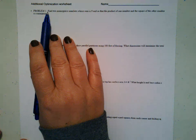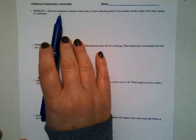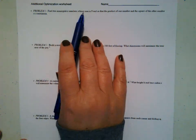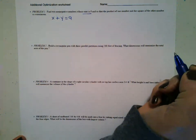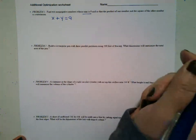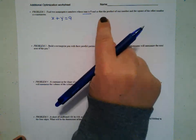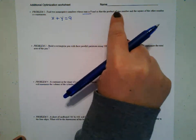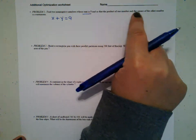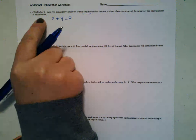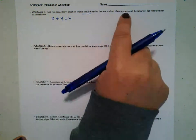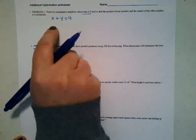So problem number one: two non-negative numbers whose sum is nine. The first thing I'm thinking of is I'm going to have two numbers — X and Y. One of them is X, one of them is Y, and they add together to be nine. And the product of one number and the square of the other number is a maximum.